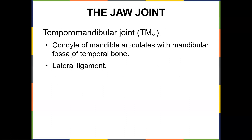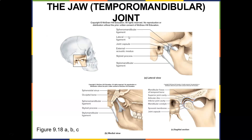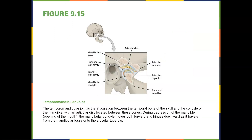The TMJ joint is where the condyle of the mandible articulates with the mandibular fossa of the temporal bone. It has a lateral ligament, joint capsule, external acoustic meatus, and styloid process with stylo-mandibular ligaments that hold everything in place. Some people develop locked jaw or a clicking sensation when the articular disc becomes torn or the mandibular condyle pops out, usually due to some kind of muscle imbalance.